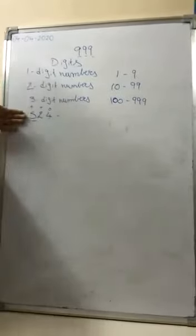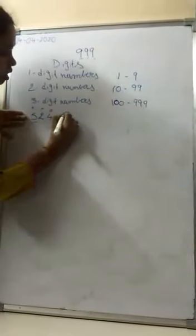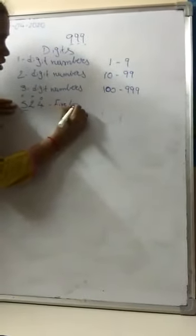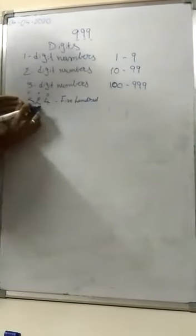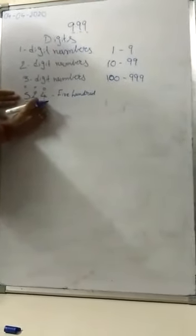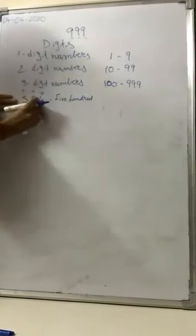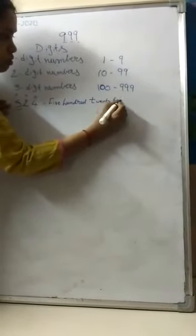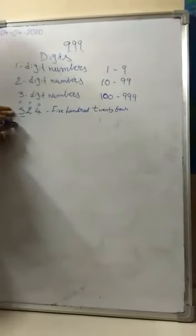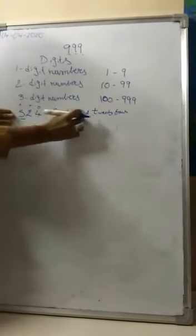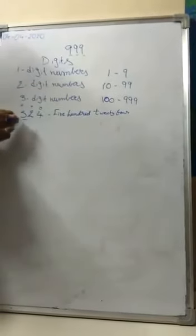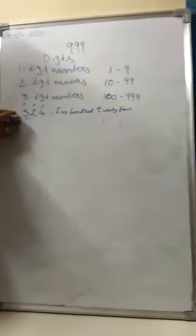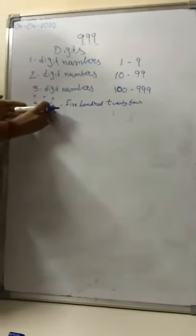I said you write the hundreds place number first. What is the number in the hundreds place here? You have the number 5. So, 5 is in the hundreds place. Write it as 524 — the hundreds place gives 'five hundred' and these two together, which is 24, gives 'twenty-four'. So the number name for 524 you will write or read as 'Five hundred twenty-four'. Remember: the hundreds place is read separately, and the tens and ones place are read together.